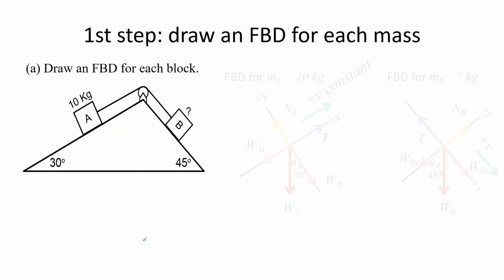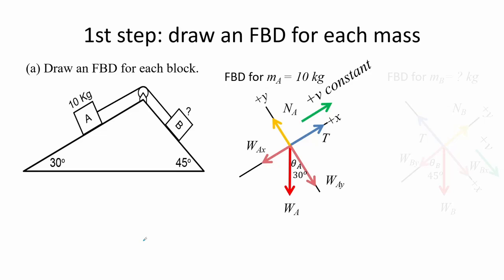First step is to draw the FBD for each mass. Here we skewed the angle of the Cartesian coordinate system while maintaining the orthogonal relationship of the X and Y axes. The X axis is of the same orientation as the surface where the blocks are placed, and this is done so that we can simplify the FBD.